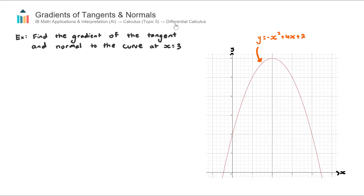Inside differential calculus, there are two main applications. We have tangents and normals and finding their equations, and then also turning points — so maximums and minimums — and that leads into a concept called optimization. We are currently looking at tangents and normals, and this video focuses on how we actually find the slopes or the gradients of these tangents and normals.